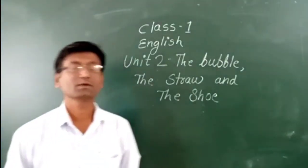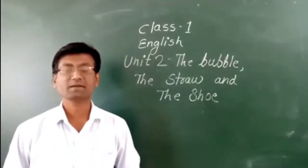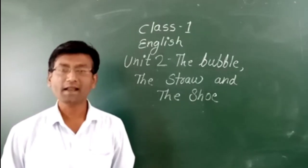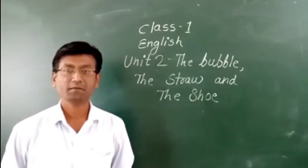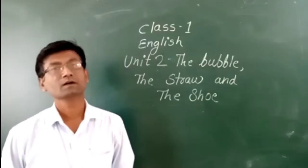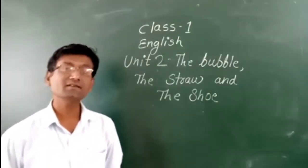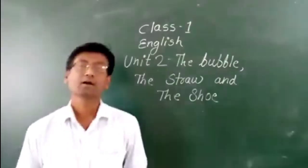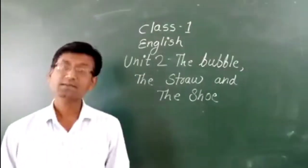Hello students, today we will see the next chapter from the book Marigold. The chapter name is 'The Bubble, the Straw and the Shoe.' It's a very interesting story. Let's begin with the reading. Once upon a time...